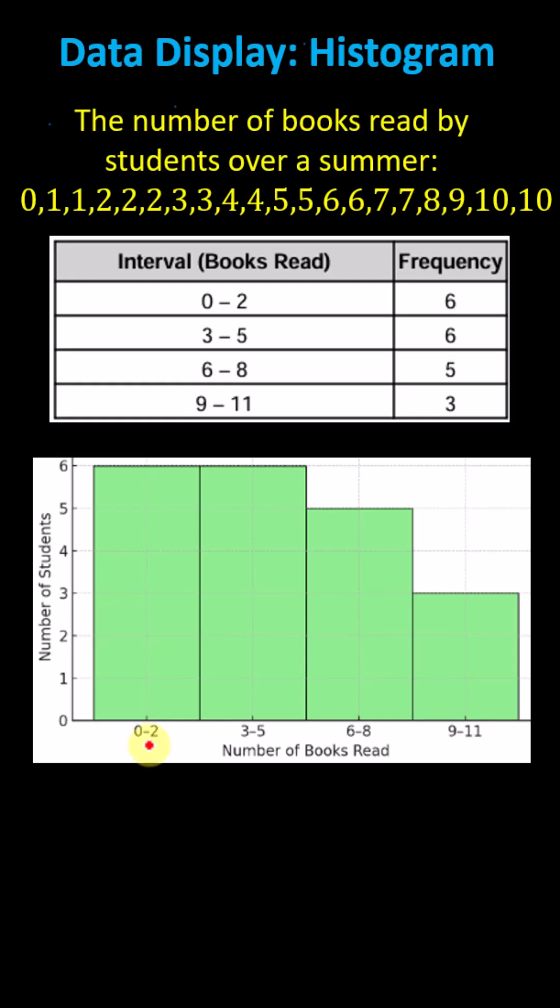For the bins 0 to 2, the frequency is 6. The bar has a height of 6. For the bins 3 to 5, the frequency is also 6. The bar has the same height and no spaces between the two bars.